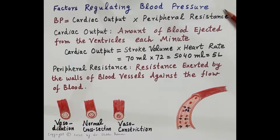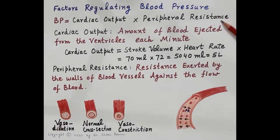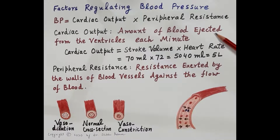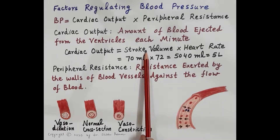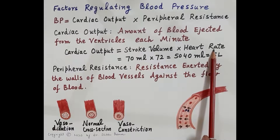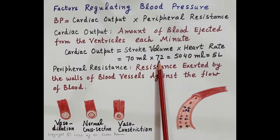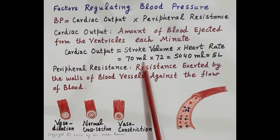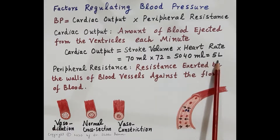There are two main factors on which blood pressure depends: blood pressure equals cardiac output multiplied by peripheral resistance. Cardiac output is the amount of blood ejected from the ventricles each minute and equals stroke volume multiplied by heart rate. Stroke volume is the volume of blood ejected during one contraction of the ventricle, about 70 ml. Heart rate is about 72 beats per minute, giving a cardiac output of approximately 5 liters per minute.